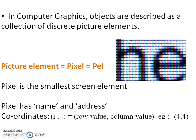In computer graphics, objects are described as a collection of discrete picture elements. Picture element equals pixel - the combination of row and column intersection is known as a pixel or spell. The pixel is the smallest screen element of an object.